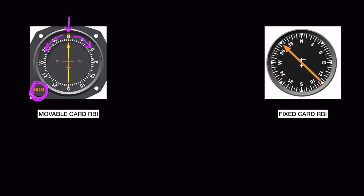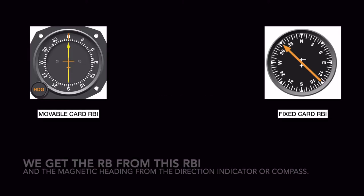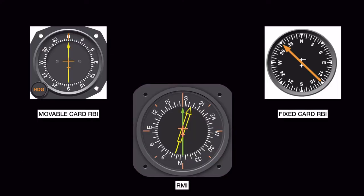The other type is a fixed card RBI — the compass card cannot be changed, so north is always aligned to the nose of the aircraft. To find the magnetic bearing to the station you must manually use the formula: relative bearing plus magnetic heading equals QDM. To make this easier, the RMI was introduced — it automatically rotates the compass card to represent the aircraft's current heading, so no manual calculation is needed.